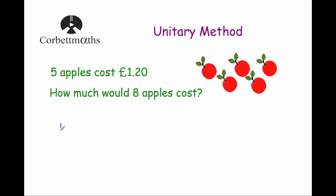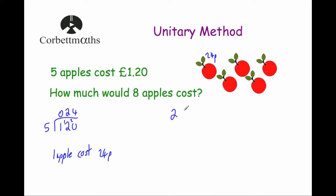One pound twenty is one hundred and twenty pence, divided by five. Five into ten goes twice remainder zero, five into twelve goes twice remainder two, and five into twenty is four. So one apple costs 24p. We then take 24p and multiply by eight: eight times four is 32, put the two down carry the three, eight times two is 16 plus three is 19. So it's 192 pence, or one pound 92.